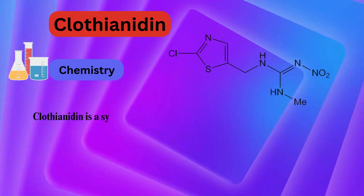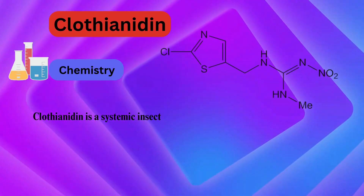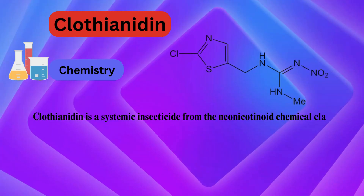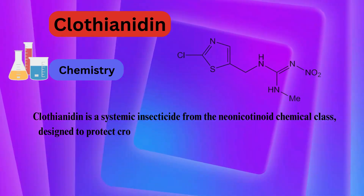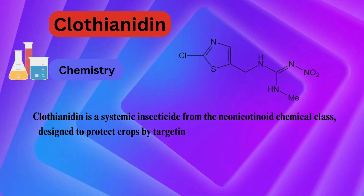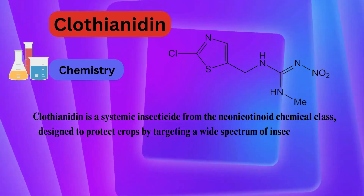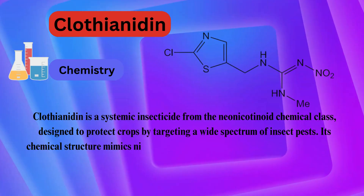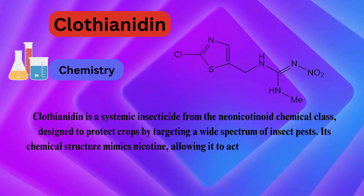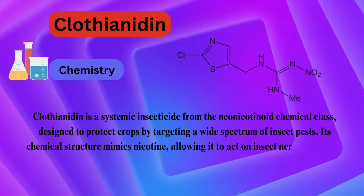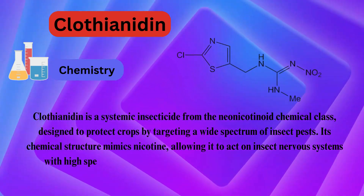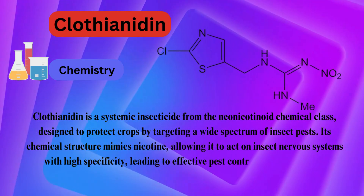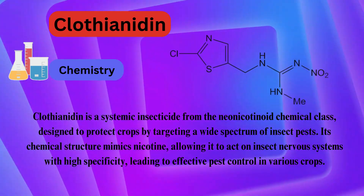Clothianidin is a systemic insecticide from the neonicotinoid chemical class, designed to protect crops by targeting a wide spectrum of insect pests. Its chemical structure mimics nicotine, allowing it to act on insect nervous systems with high specificity, leading to effective pest control in various crops.